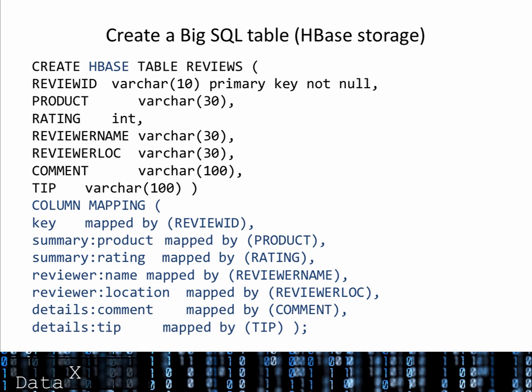This example creates a Big SQL table named reviews that uses HBase for storage. The reviews table contains seven relational columns that track information about product reviews and people who post these reviews. The column mapping clause midway through this example specifies how the SQL columns relate to the underlying HBase column families and their columns. Note that the HBase row key maps to the SQL review ID column. Other SQL columns map to specific columns within one of the three different column families of HBase. For example, the SQL product column is stored in the HBase product column within the Summary column family.